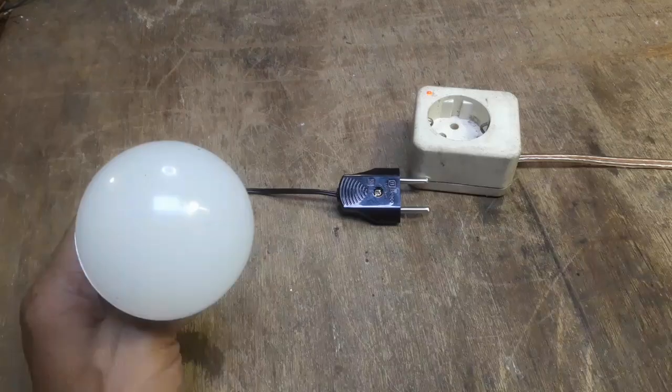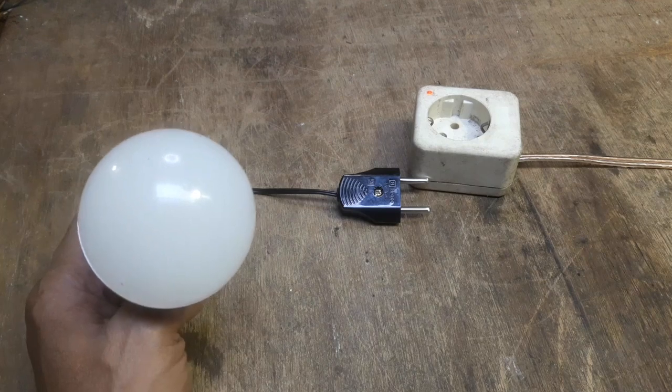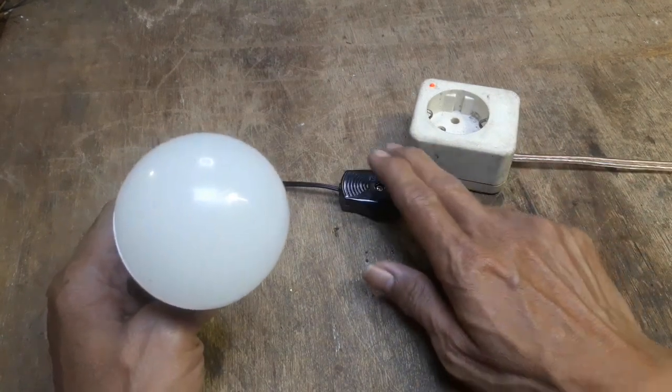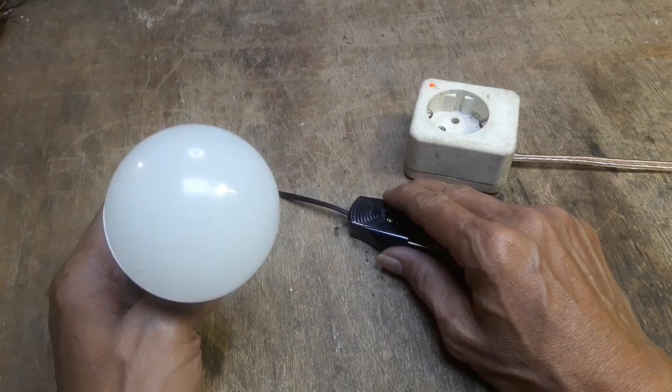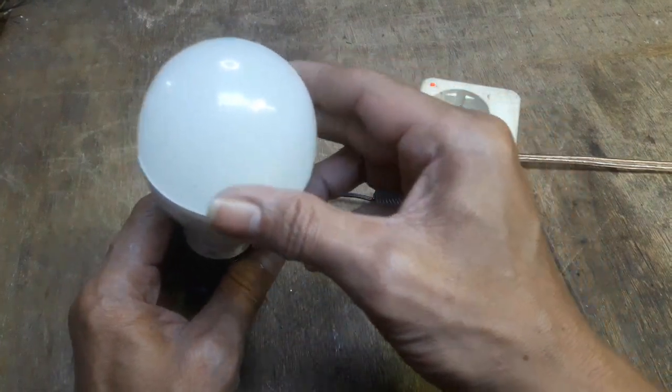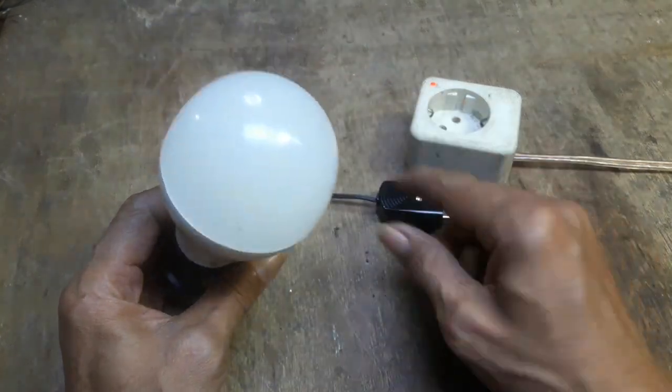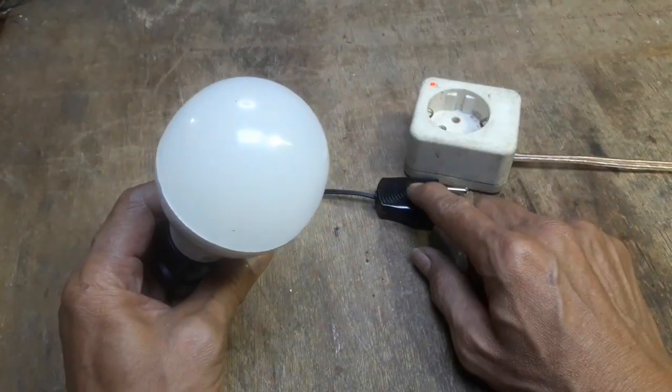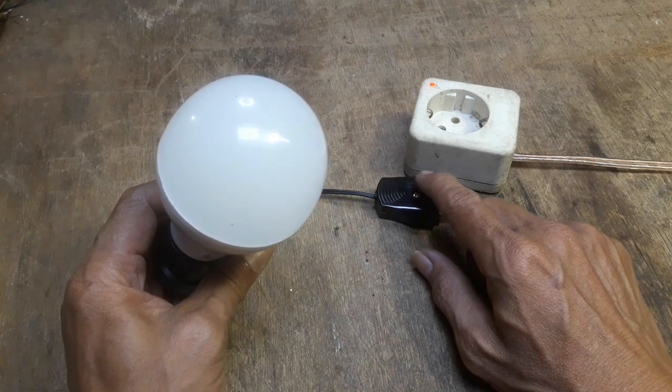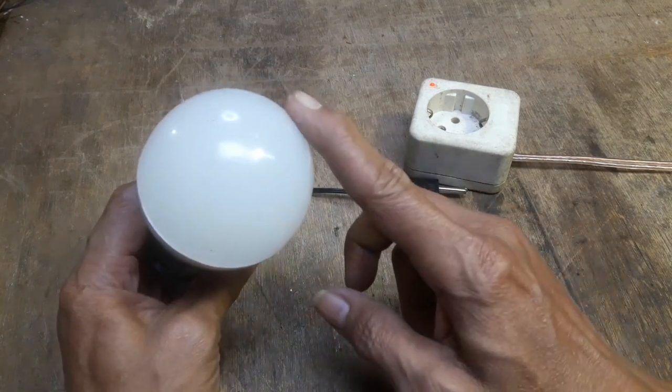Halo teman-teman, Assalamualaikum warahmatullahi wabarakatuh. Sekedar berbagi untuk membuat lampu LED otomatis. Gimana caranya untuk membuat lampu ini menjadi nyala posisi malam hari dan posisi siang hari mati.